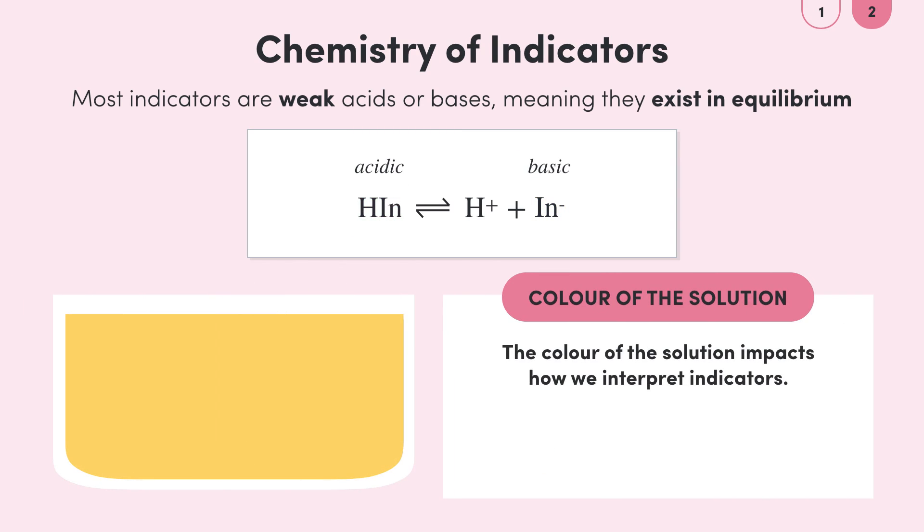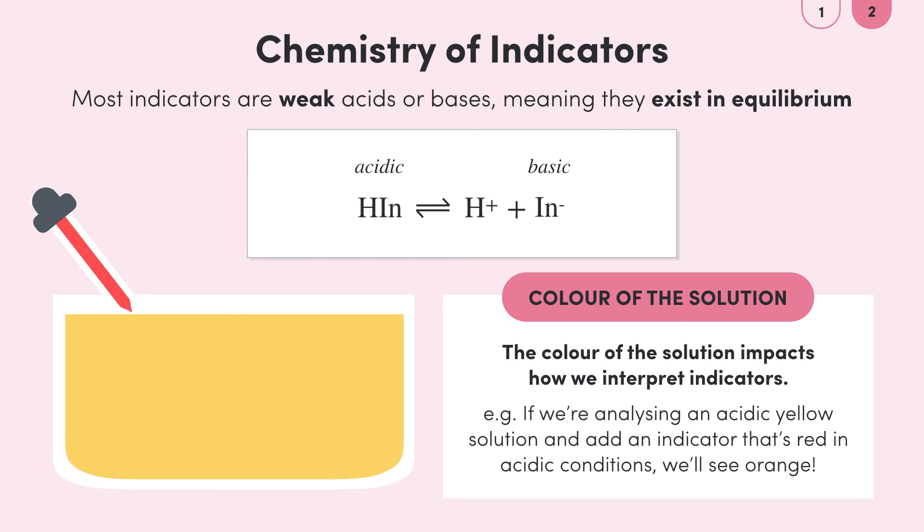As a quick note the color of the solution impacts how we interpret indicators. Indicators work well when we add them to clear and colorless solutions because we can easily see the color. But not all solutions are like this. If we're analyzing an acidic yellow solution and use an indicator that is red in acidic conditions we'll instead see an orange color. So it's important to consider which indicator to use for different solutions.